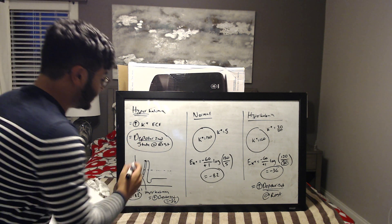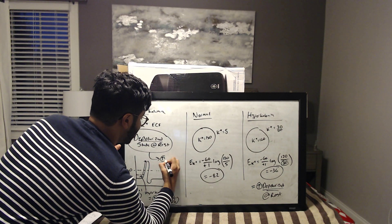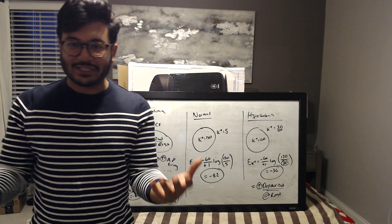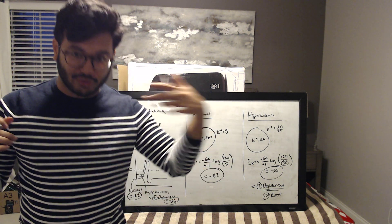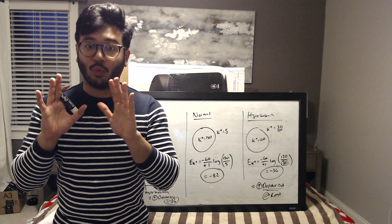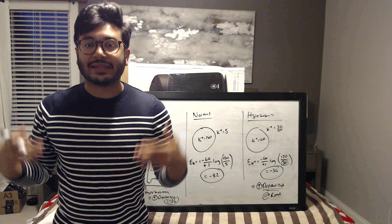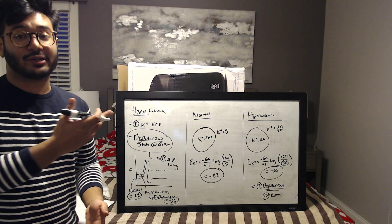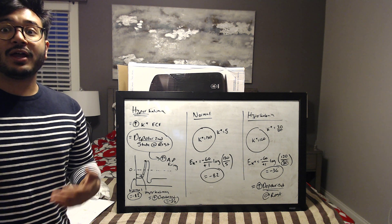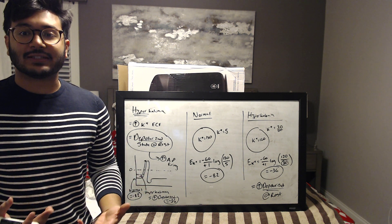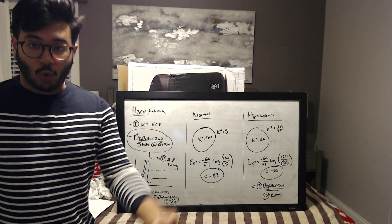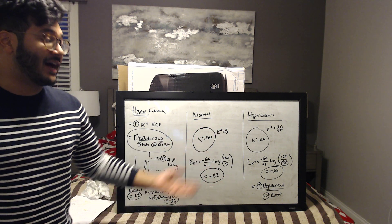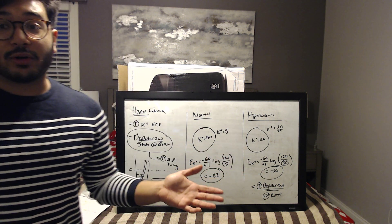Being more depolarized at rest means there's an increase in action potential firing. If you think about it, depolarization is what triggers action potentials. The reason hyperkalemic patients get muscle fatigue is because action potentials are firing too much — your muscles are working over and over and just get tired. That's what's happening with hyperkalemia.